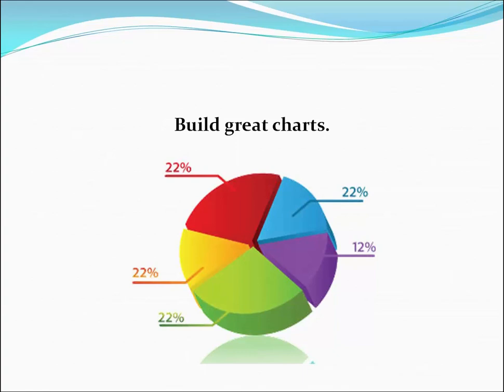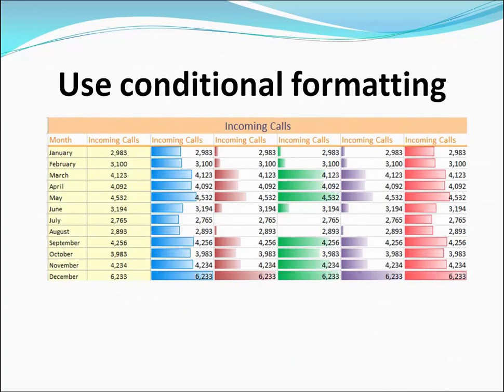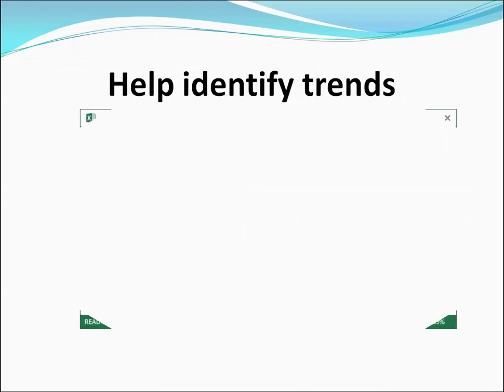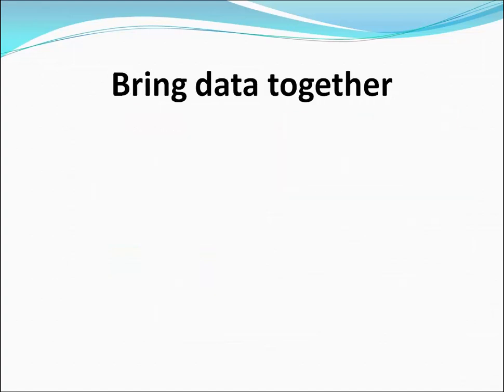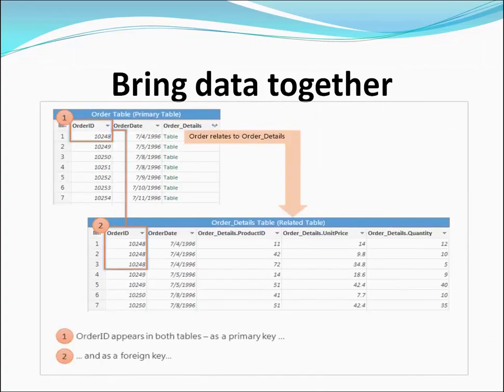You can use conditional formatting to understand the data at a glance — it helps identify trends. You can see over here which area, year, month, or day is important. You can get all of these important records at a glance. It also brings the data together — you can retrieve data from different tables and cells and connect them in a single place.